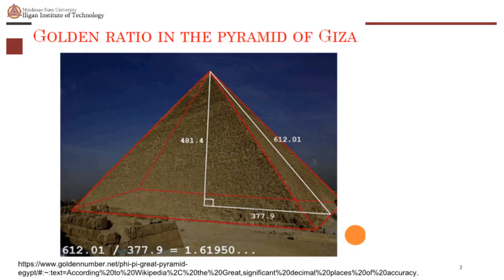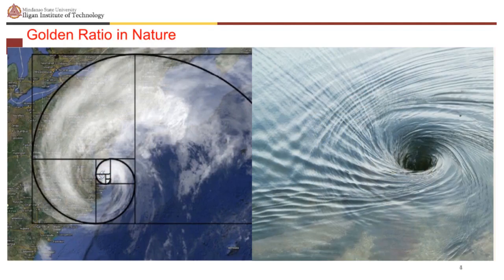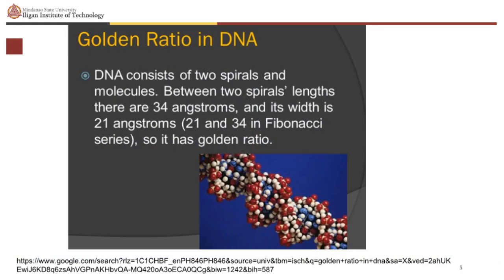Many believed that even the Pyramid of Giza has the golden ratio. Golden ratio in nature is undeniably present too. Faces, both human and non-human, abound with examples of the golden ratio. The golden spiral is found in nature. The golden ratio is sometimes called the divine proportion because of its frequency in the natural world. The golden ratio in DNA consists of two spirals and molecules. Between two spiral lengths there are 34 angstroms, and its width is 21 angstroms — 21 and 34 are in the Fibonacci sequence — so it has a golden ratio.